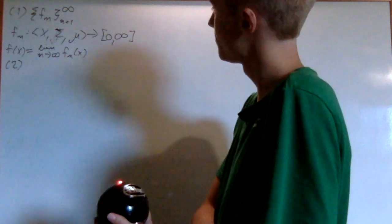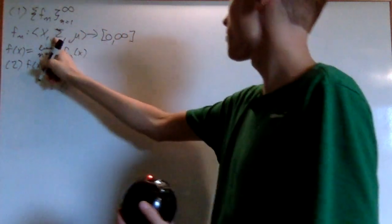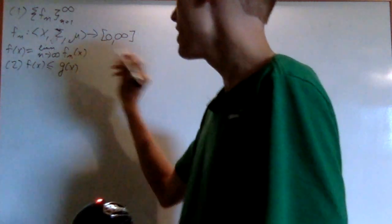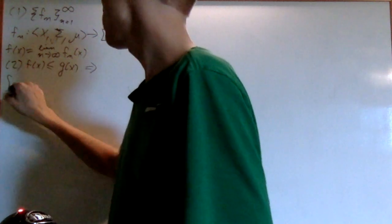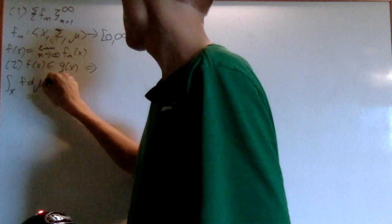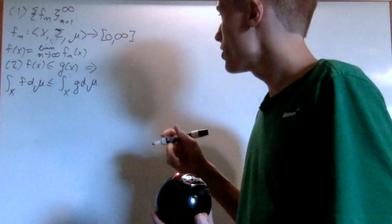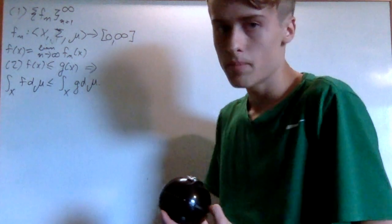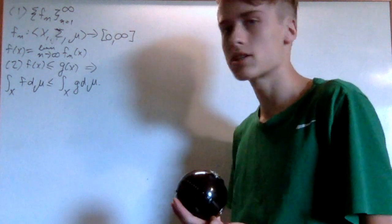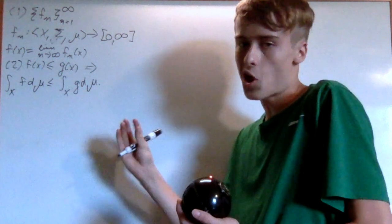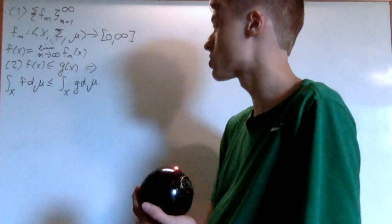Number two: if f(x) is a measurable function from this space into [0, ∞) and it's less than or equal to g(x), a measurable function into [0, ∞), then the Lebesgue integral over X of f dμ is less than or equal to the Lebesgue integral over X of g dμ. You may wonder if these functions need to be bounded for the Lebesgue integral to exist. Actually, no — if they're unbounded, their integrals are just infinity.